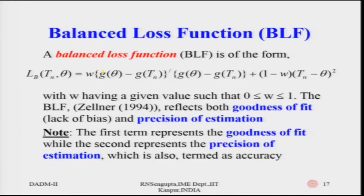In the balanced loss function, the weight delta (W) is between 0 and 1. The first term (1−W) × (Tn − θ)² represents the precision of estimation — the squared error for estimating parameter theta using sample estimate Tn. The second term W × [g(θ) − g(Tn)]² represents the goodness of fit or lack of bias, capturing the forecasting error.